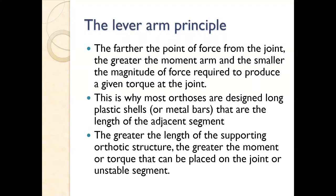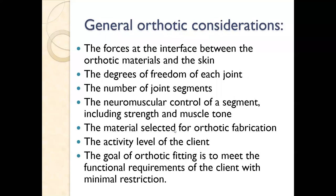The lever arm system states that the farther the point of force from the joint, the greater the movement arm, and the smaller the magnitude of force required to produce a given torque at the joint. This is why most orthoses are designed with long plastic shells the length of the adjacent segment. For a very unstable ankle, we may want an AFO that goes all the way up the calf to provide a longer lever arm and more support.